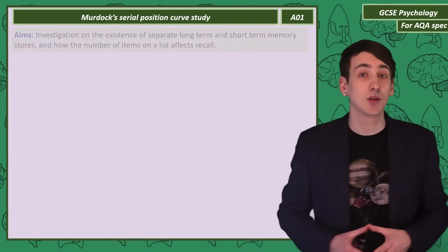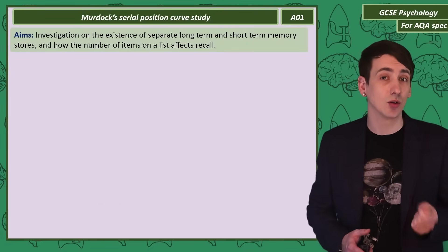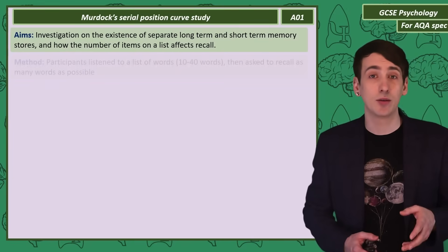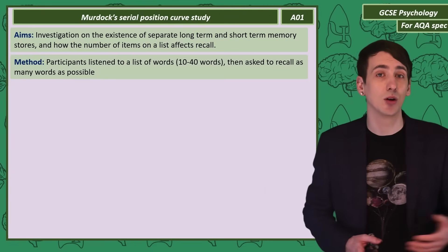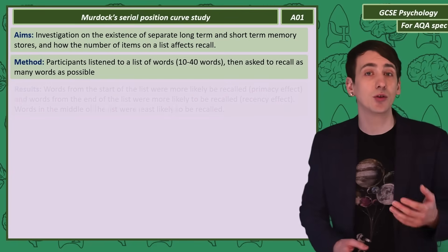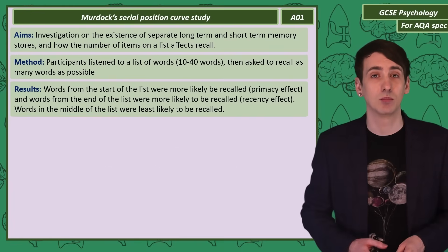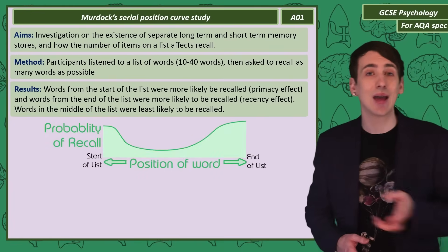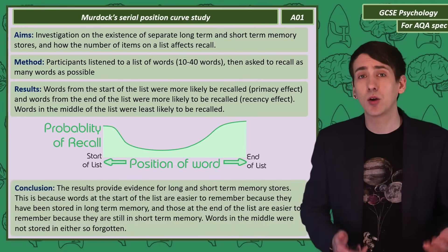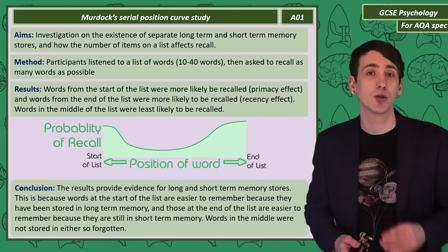A researcher called Murdoch conducted a study aiming to investigate short-term and long-term memory stores and how the number of items on a list affects recall. Murdoch's method was to ask participants to listen to a word list and then record as many words as possible. His results showed both the primacy and the recency effect in recall — participants were more likely to recall words at the start or the end of a word list. Murdoch concluded that this showed evidence for both long-term and short-term memory stores.